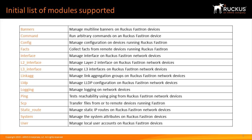Here is an initial list of modules that are supported today in ICX. They include creating banners, changing Layer 2 or Layer 3 interfaces, ping modules, and changing user accounts. The initial list pretty much covers all the basic functionalities done in CLI today that can be automated by Ansible.